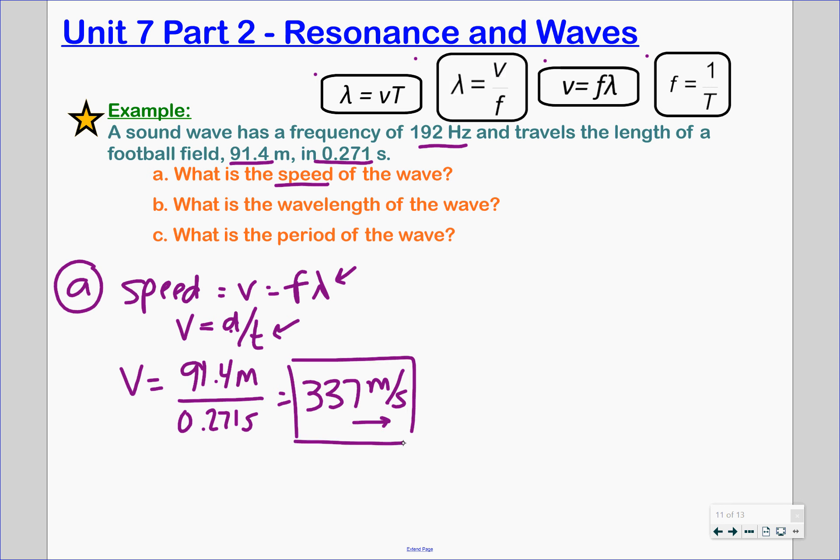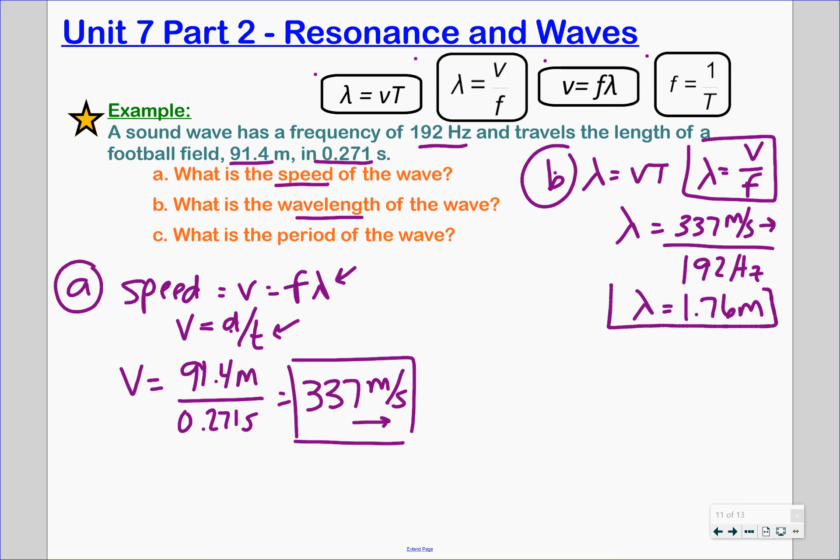Part b asks us to find what is the wavelength of the wave? Well wavelength is simply lambda. So we have these two formulas up here. We have wavelength is velocity times the period or we have wavelength is equal to velocity over frequency. Now we haven't solved for our period yet so let's go ahead and use this guy. So we know our lambda or our wavelength is going to be equal to our velocity that we just calculated, 337 meters per second, all over our frequency and they told us the frequency of our sound wave was 192 hertz. Now we're going to have to just commit these formulas, I'm sorry not formulas, to commit these units to memory. So if we take the 337 and we divide by the 192 we simply get an answer of 1.76 meters. That would be your answer in three significant digits. So that is your wavelength.